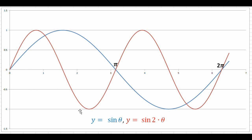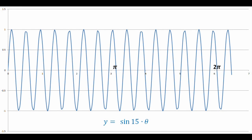Now if we look at another sine curve on this same plot, the red one is sine of two times theta. You notice there are more waves than with the blue y equals sine theta curve. We say that the number multiplying into the theta value represents the frequency — the higher this number, the higher the frequency.